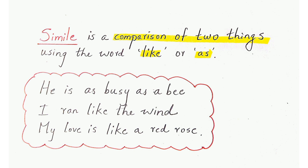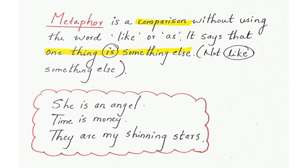Other simile examples: 'He is as busy as a bee,' 'I ran like the wind,' 'My love is like a red rose.' Just like a simile, metaphor is also a comparison between two similar things, but in metaphor we don't use the words 'like' or 'as.' We compare two things without these words and say that one thing is something else. 'She is like an angel' is a simile, but 'She is an angel' is a metaphor. Other examples: 'Time is money,' 'They are my shining stars' — no 'like,' no 'as.'